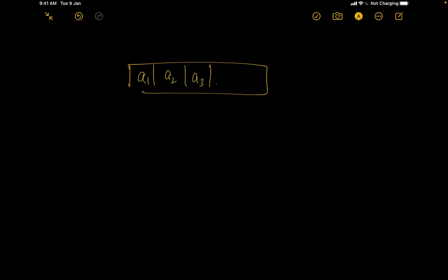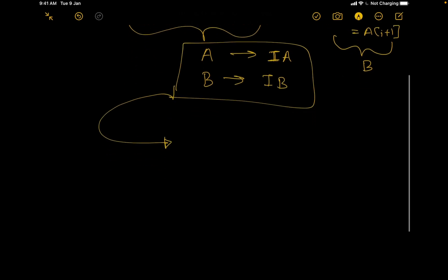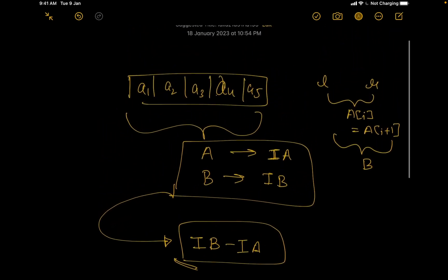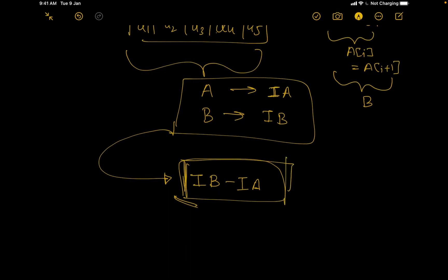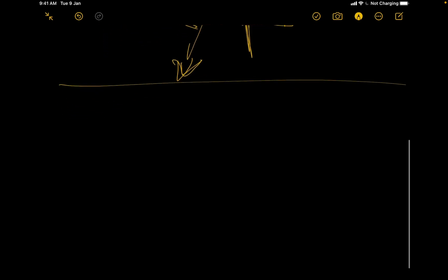After performing this operation at most once, we get a new array b. We have to perform this operation in such a way that the inversion count of b is minimized. At the end, what we have to return is the difference in the inversion count of array a and array b, that is ia minus ib. Since ia is a fixed value, we basically have to minimize ib.